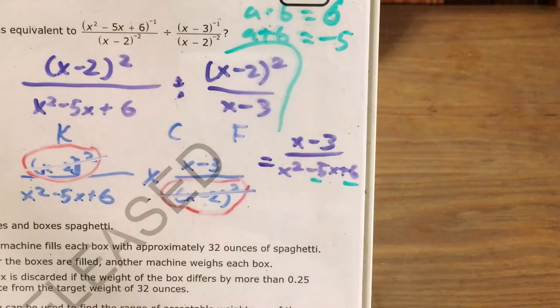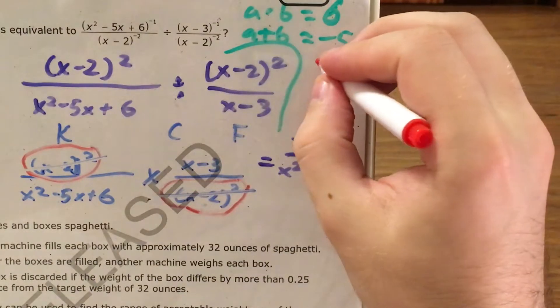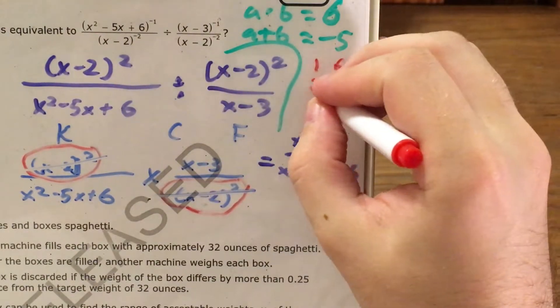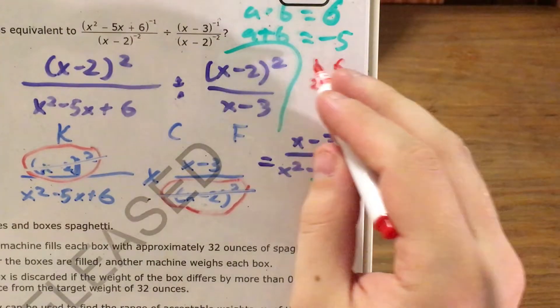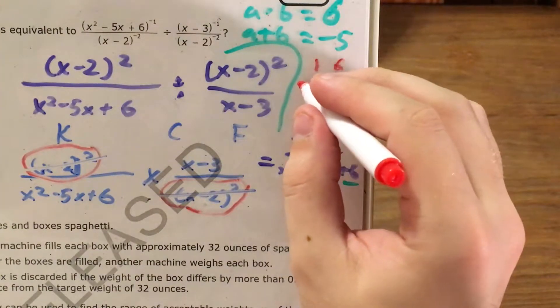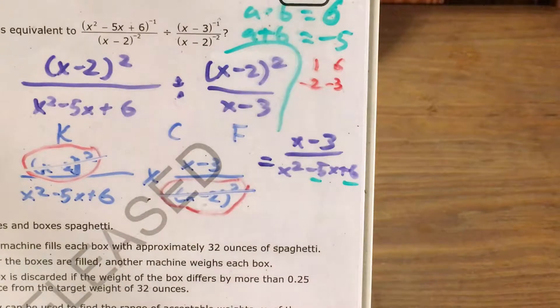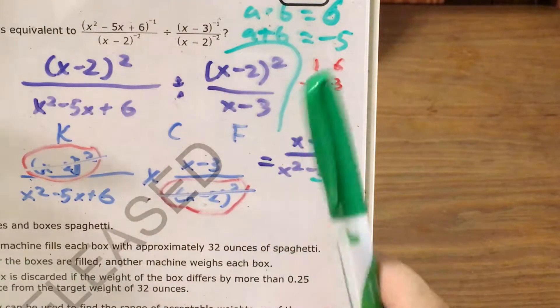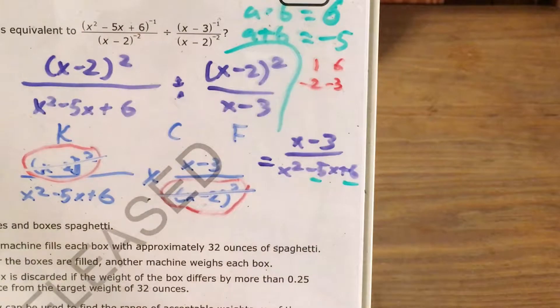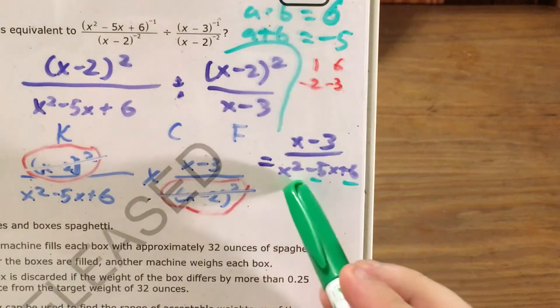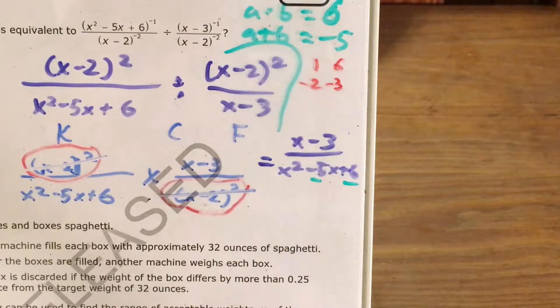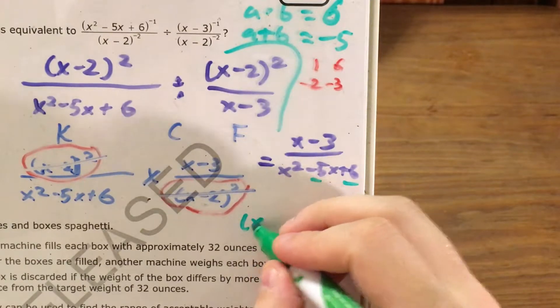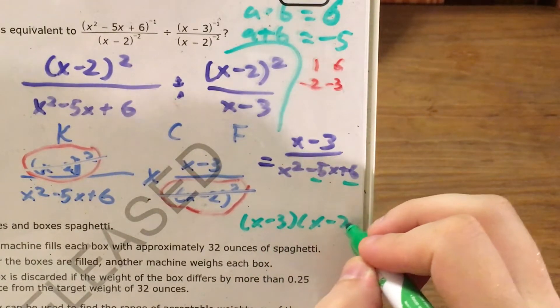Factor pairs of 6 include 1 and 6, 2 and 3. None of these pairs add to negative 5. But if I put a negative sign on them, they do add to negative 5. And so I'm gonna go ahead and use this information, and by the way, negative 2 times negative 3 still gets me positive 6, so I'm in the clear on that. I'm gonna use this information to say that now I can split this up, x squared minus 5x plus 6 into x minus 3 times x minus 2.